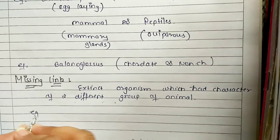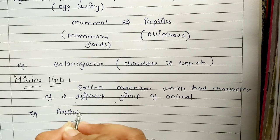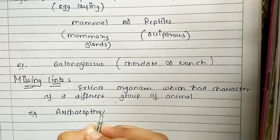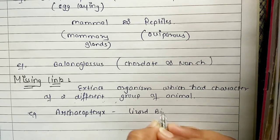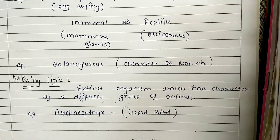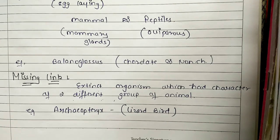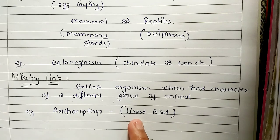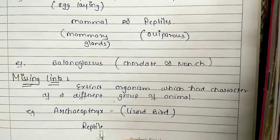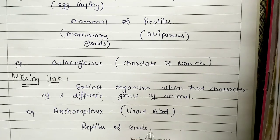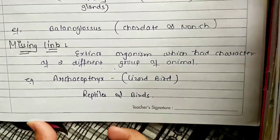The most interesting example is Archaeopteryx, called Lizard Bird. It is a missing link between reptiles and birds. Why? Because it had characters of both reptiles and birds. It resembled reptiles and also resembled birds. Let's talk about how it resembled birds.